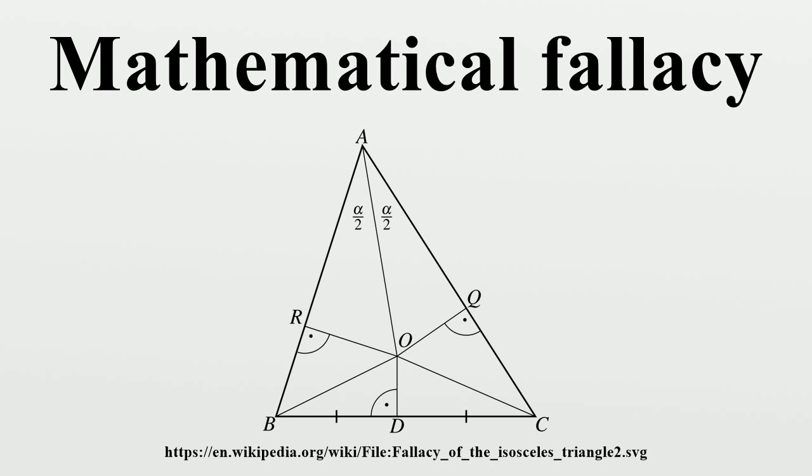QED. As a corollary, one can show that all triangles are equilateral, by showing that AB equals BC and AC equals BC in the same way. The error in the proof is the assumption in the diagram that the point O is inside the triangle.